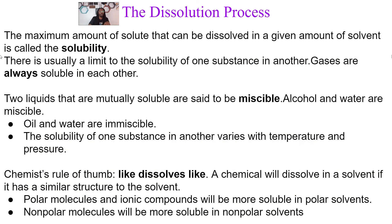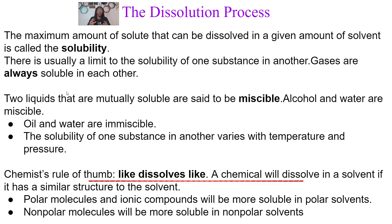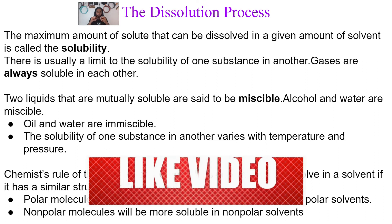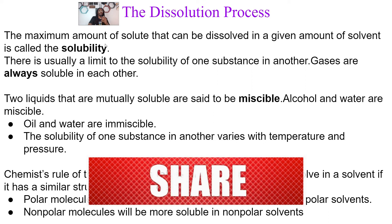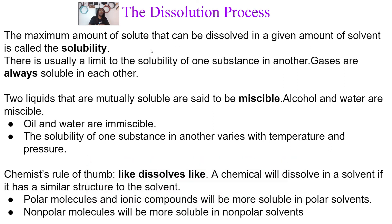Let's talk about some terms with the dissolution process. Now we understand intermolecular forces, so let's talk about terms we've probably heard before but now understand why they happen. Solubility — we understand solubility now. With the solvent-solute interaction, solute-solute, and solvent-solvent going on at the micro scale, solubility is the maximum amount of solute that can be dissolved in a given amount of solvent. For every solvent, it's going to have a max amount that the solute can be dissolved.